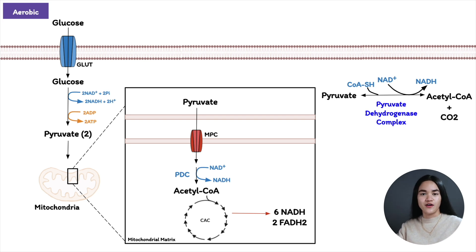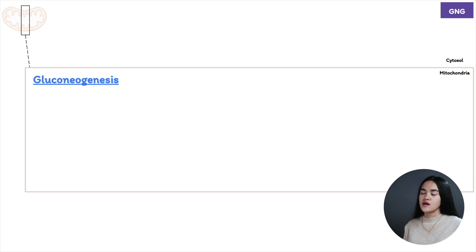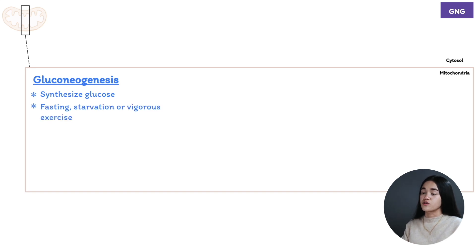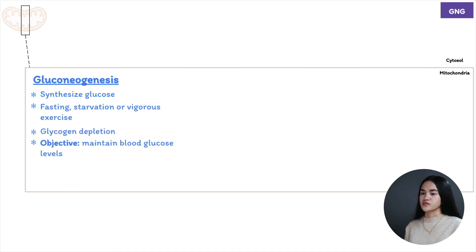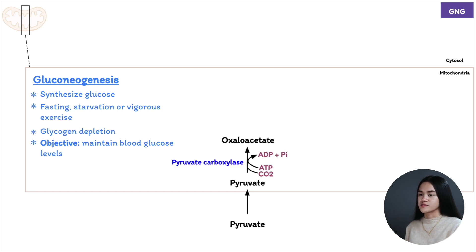Now let's move on to the next pathway of pyruvate: gluconeogenesis, where pyruvate is converted to oxaloacetate. Gluconeogenesis occurs primarily in the liver and to a lesser extent in the renal cortex of the kidney. It is the process of synthesizing glucose from non-carbohydrate sources, and it happens during fasting, starvation, or vigorous exercise when glycogen is depleted — with the objective of maintaining blood glucose levels. For gluconeogenesis to occur, we need carbon skeletons and energy. The pyruvate produced in the cytosol is transported into the mitochondria, where it is converted to oxaloacetate by pyruvate carboxylase; this reaction requires ATP and the coenzyme biotin.